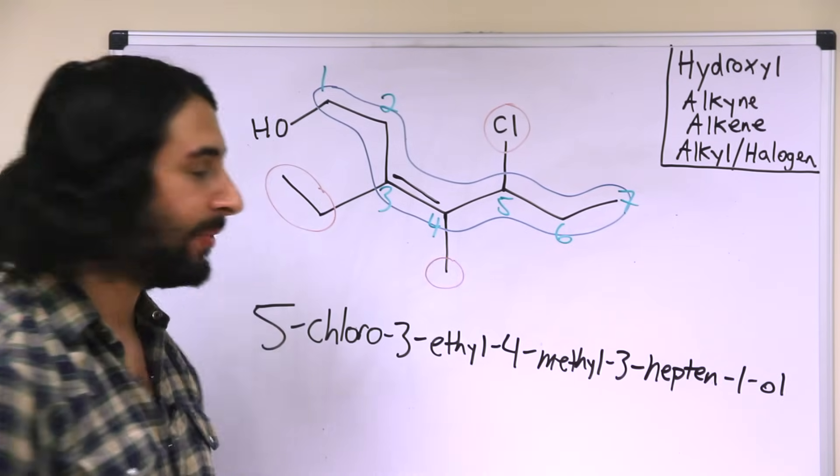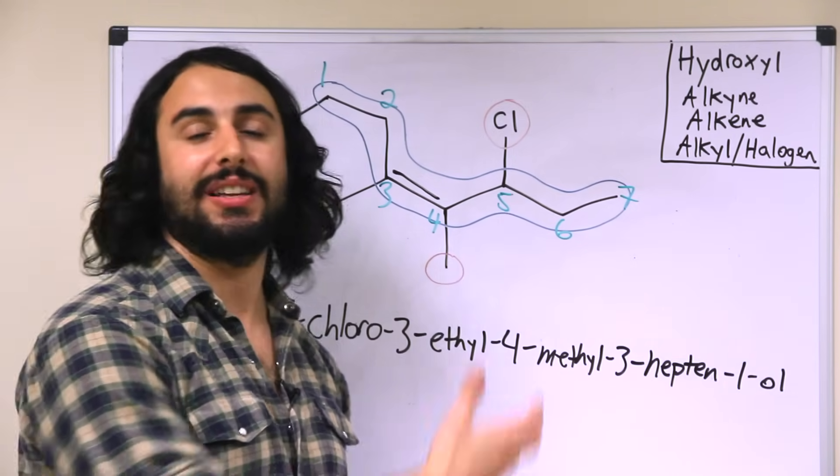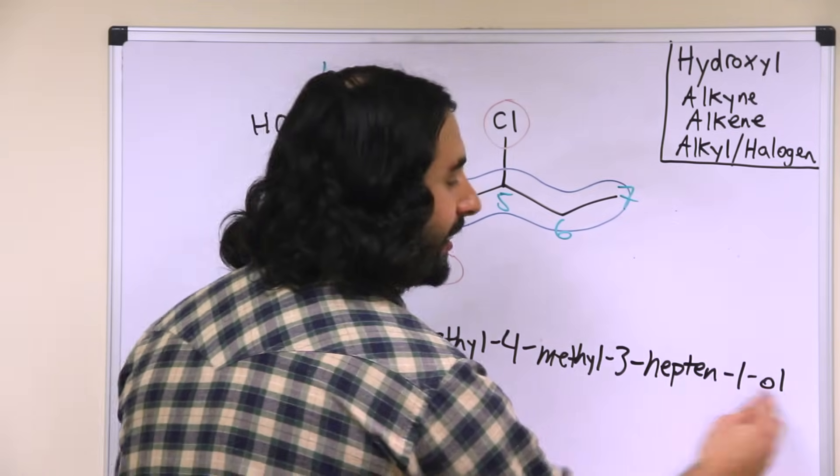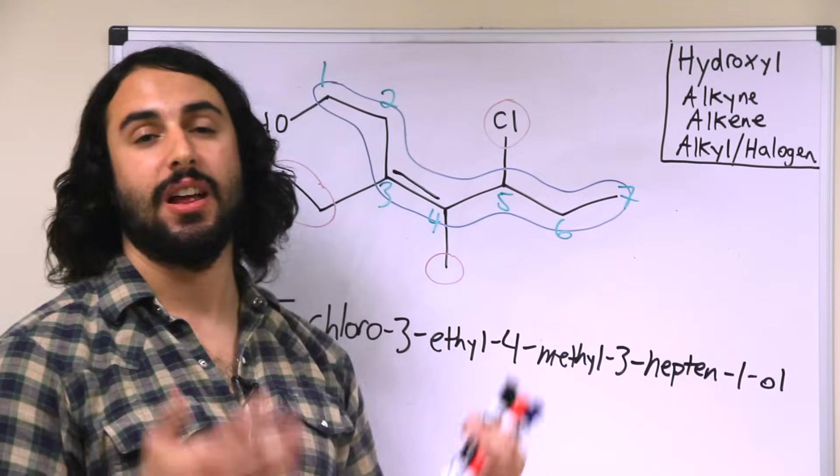The convention is to drop the e in heptene to indicate that there is more of the molecule to list, and then after that list the presence of the hydroxyl group last because that does take the top priority.